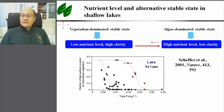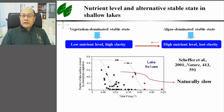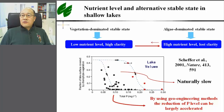Scheffer and colleagues reported that vegetation-dominated states in Lake Malouwi collapsed as total phosphorus increased beyond 0.2 milligrams per liter. To restore vegetation-dominated states, total P must be reduced. However, vegetation-dominated states can only be restored at a much lower P level, around 0.1 milligrams per liter. This reduction of total P can be very slow in natural waters because of the memory effect of P in the sediment. Using geoengineering methods, the reduction of P levels can be largely accelerated, provided that the external load is under control.